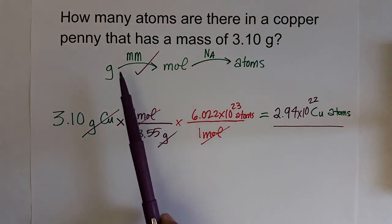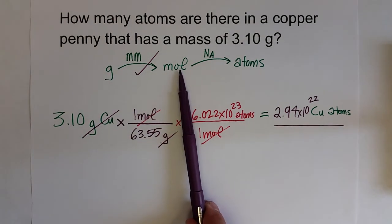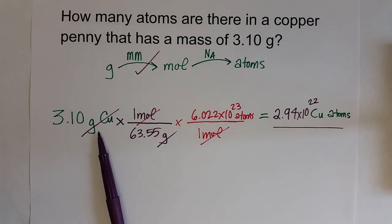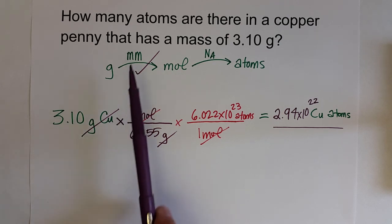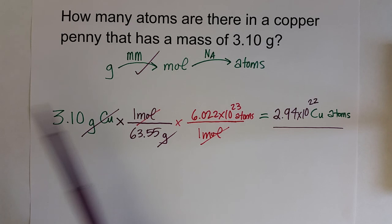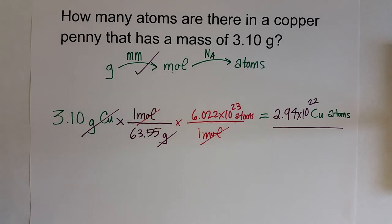Just like before, anytime we convert from grams to moles or vice versa, we need the molar mass from the periodic table. If this were a molecule or compound, we would calculate the molar mass and then convert grams to moles. Now we can also calculate how many atoms or molecules are in a sample using Avogadro's number. We'll see you next time.